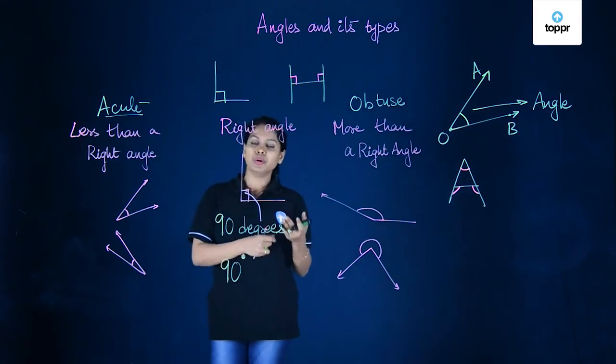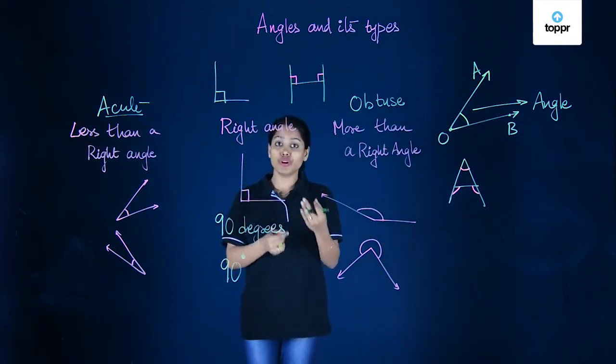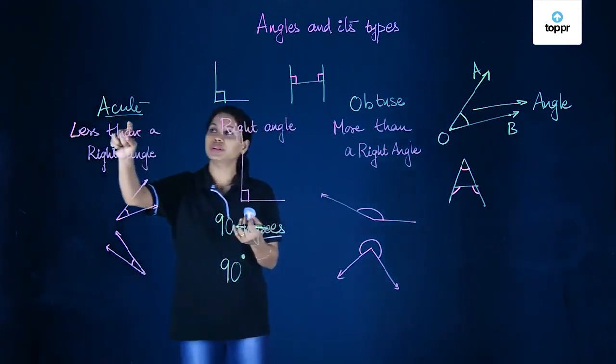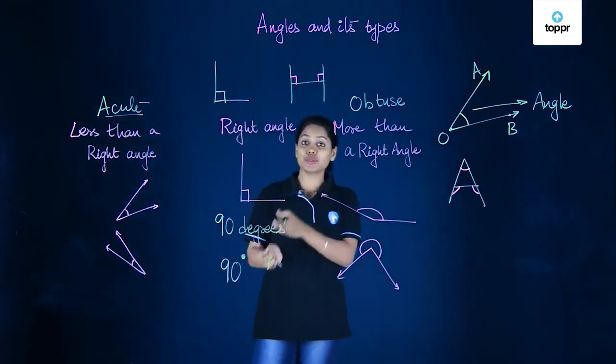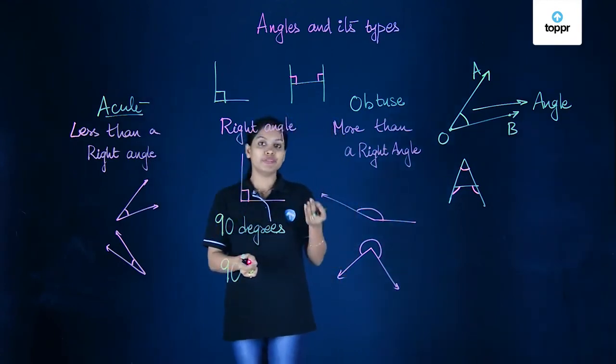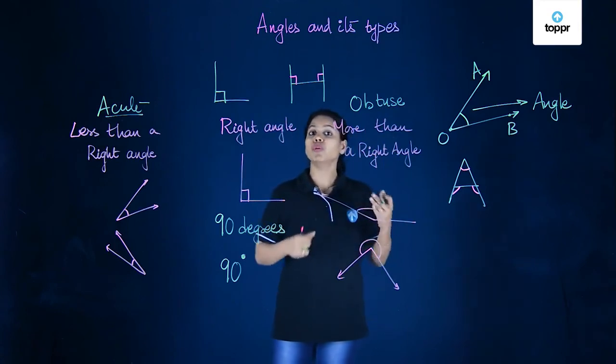That means if we come across an angle that is smaller than 90 degrees, like 30 or 35 or 45 degrees, that comes under the category of acute angles. And if we come across an angle that's bigger than 90 degrees, could be 95 or 100 degrees, that comes under the category of obtuse angles.